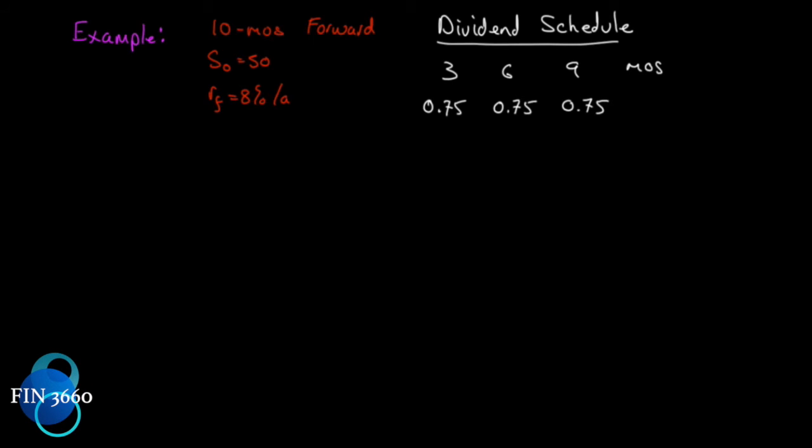Alright, let's look at an example of pricing out an investment asset with a known income. We'll look at a 10-month contract. We want to find the forward price or futures price today. We observe in the marketplace an asset currently selling for $50, a risk-free rate of 8% per annum, and this particular asset, which is probably a stock, has a dividend schedule: quarterly dividends of 75 cents in three months, six months, and nine months within this 10-month time frame. So this is an investment asset with known income.